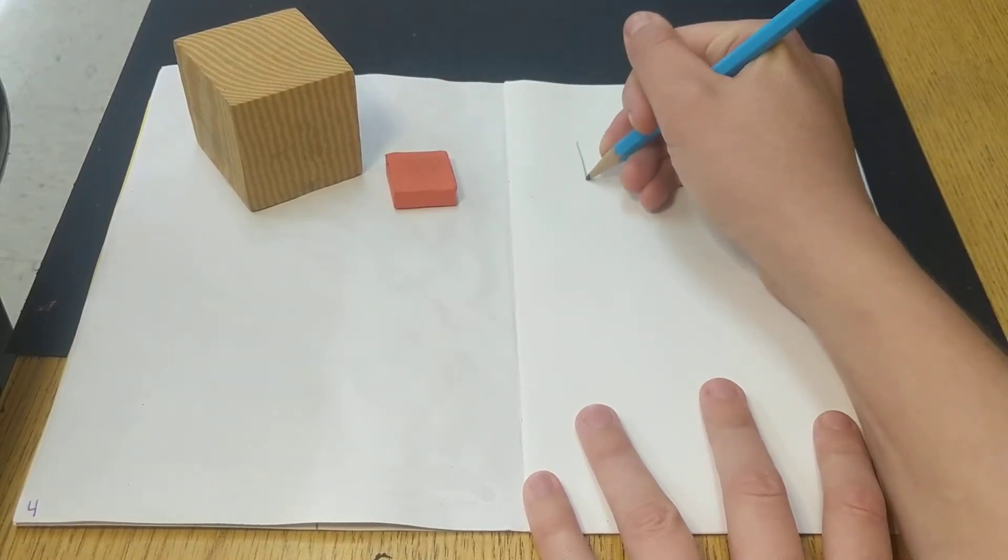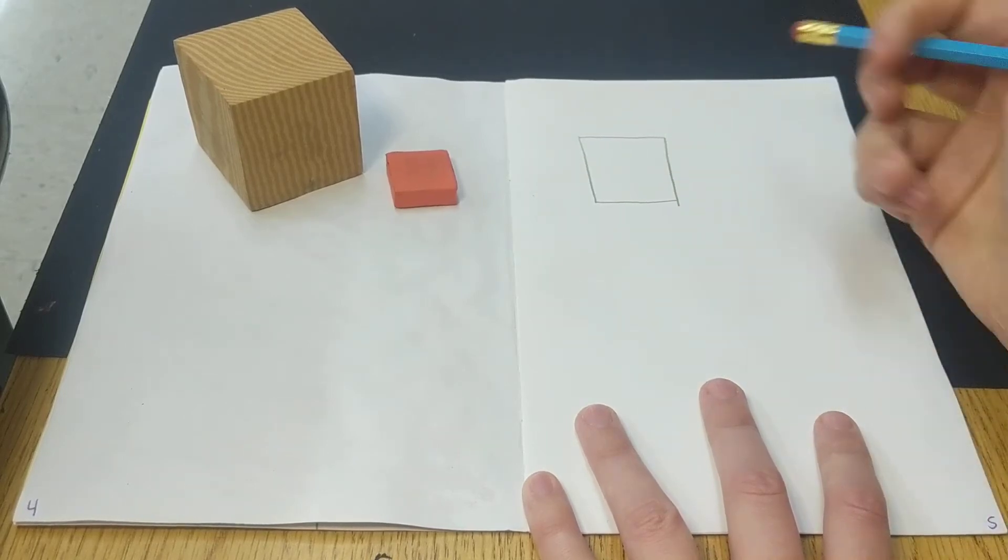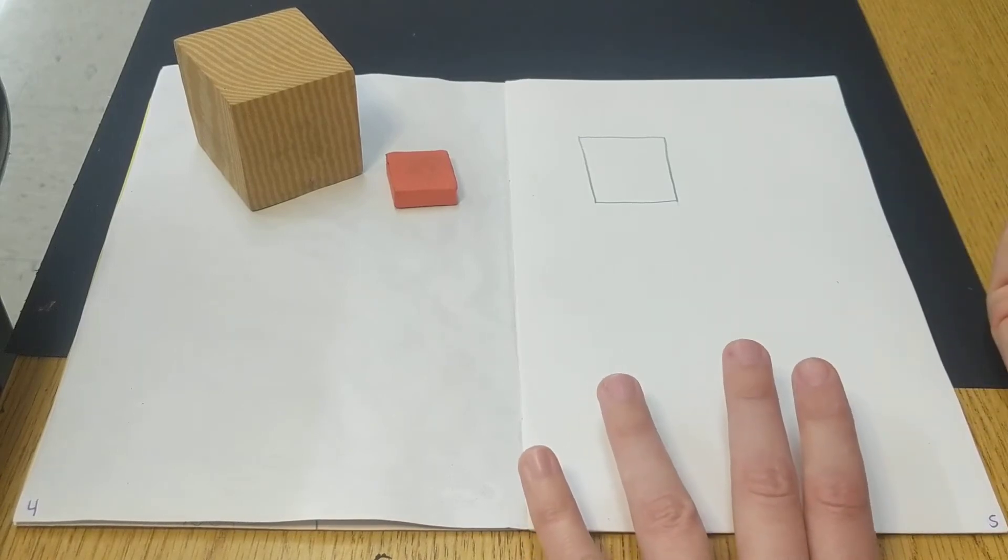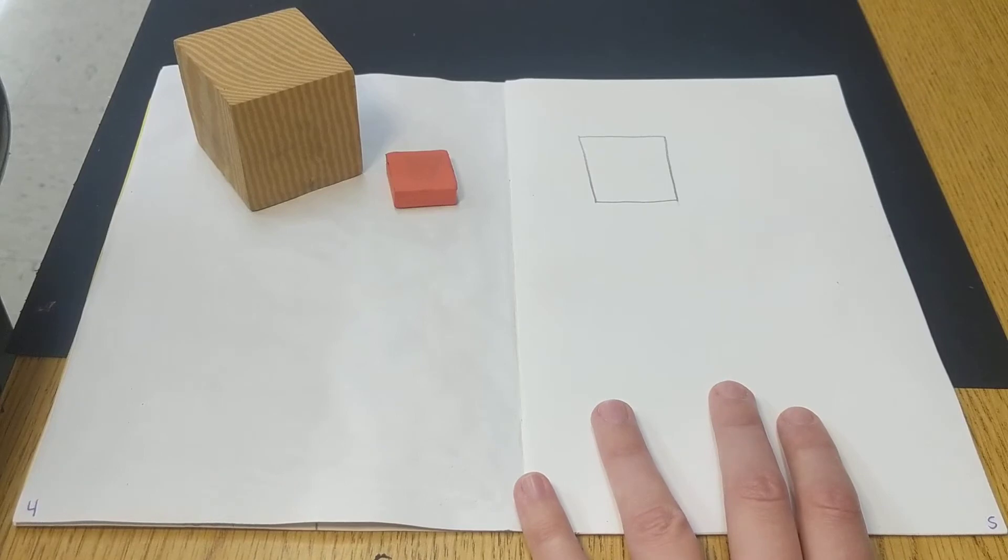So I'm going to start by drawing a square. Always a good idea to draw lightly, especially now, artists. If you want to get a ruler to make your lines straighter, you can. Sometimes it takes longer than is necessary, but I leave that up to you.